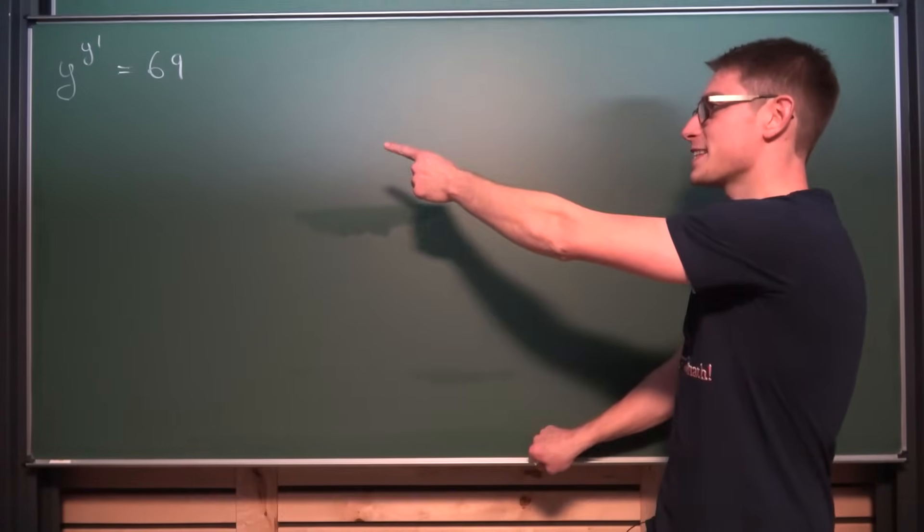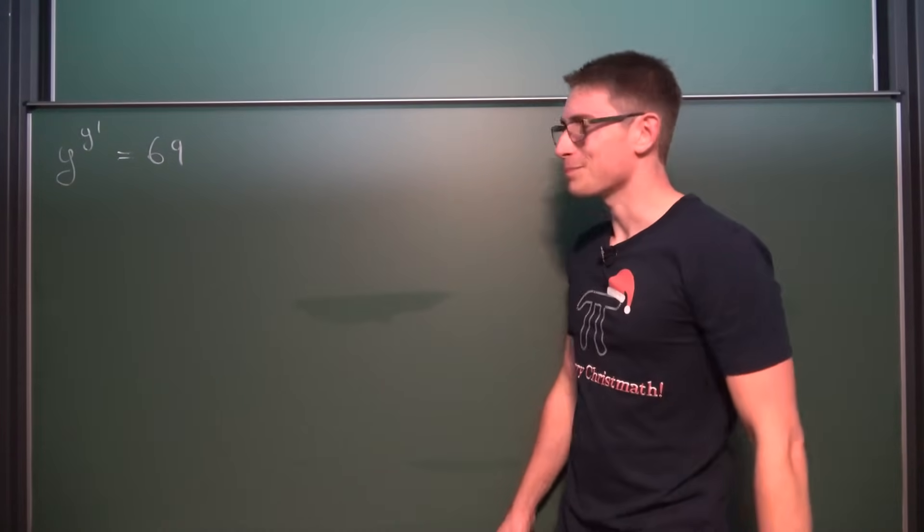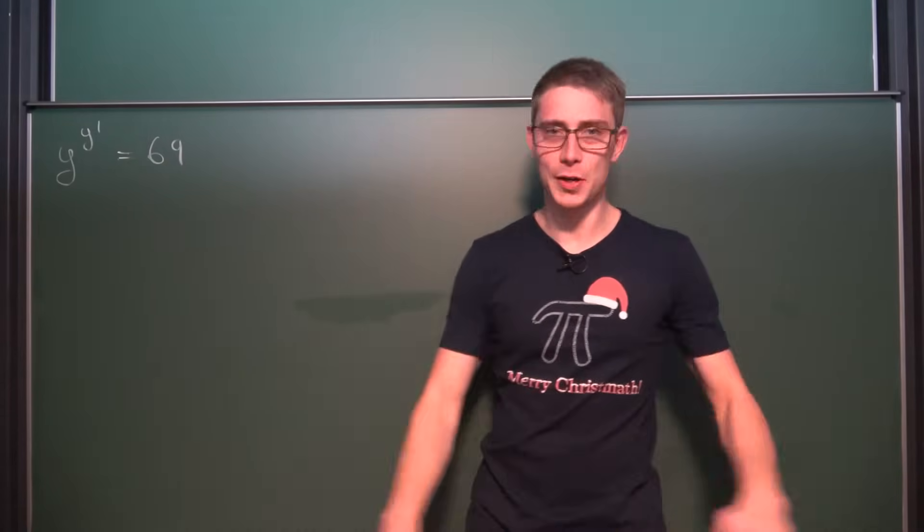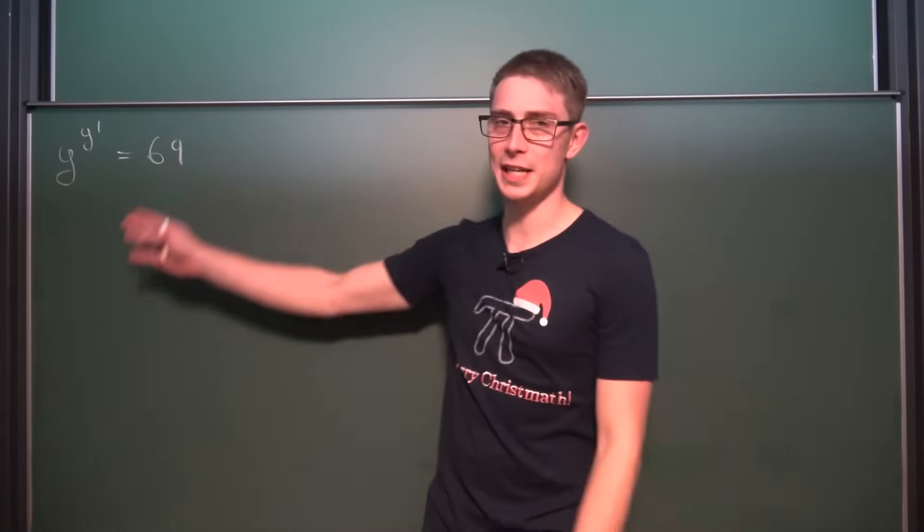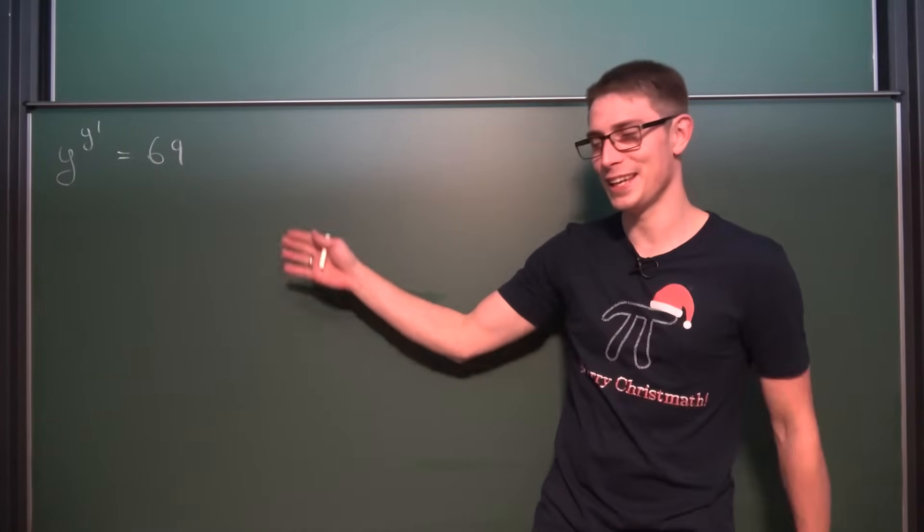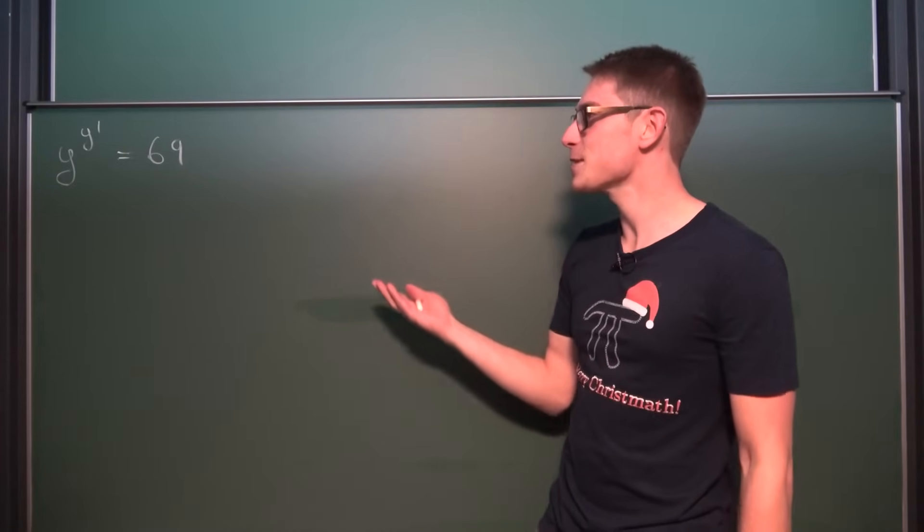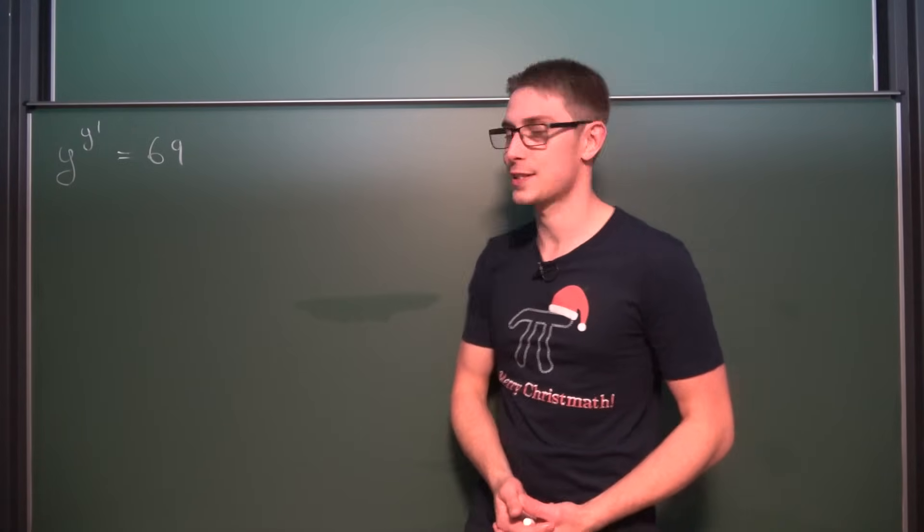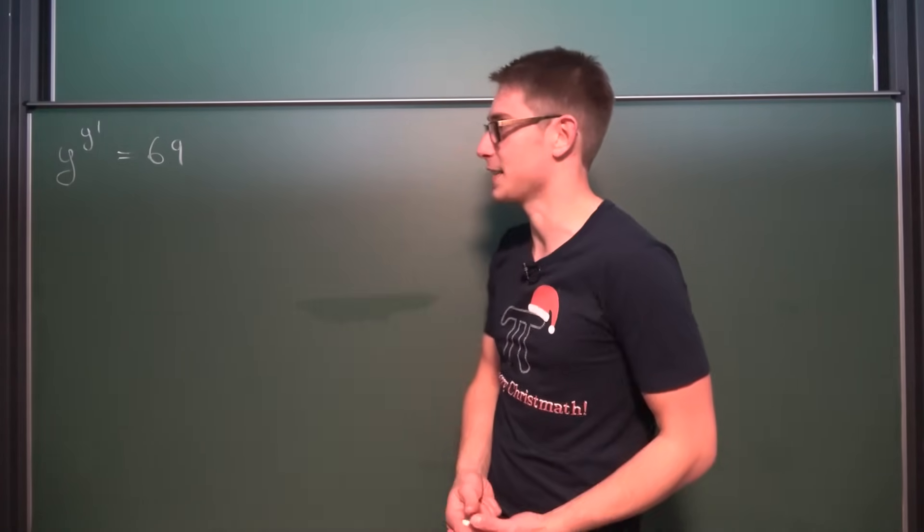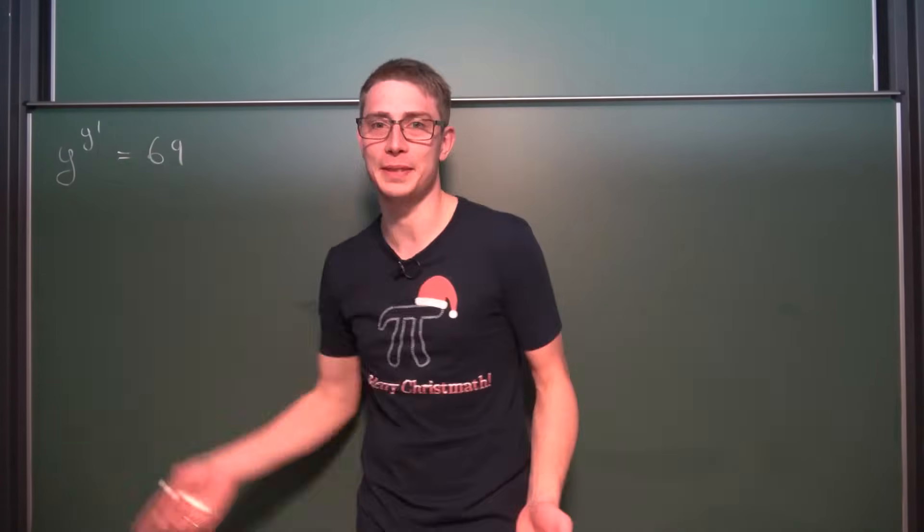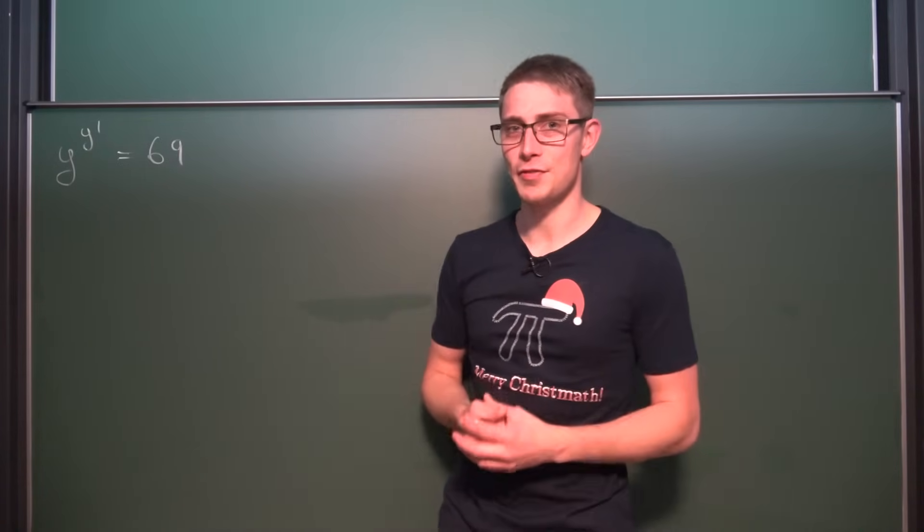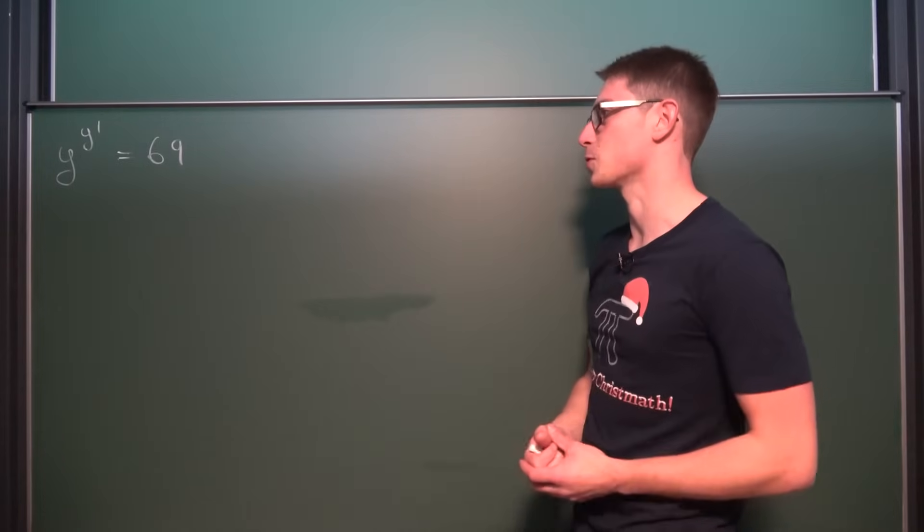And now this differential equation right here. y to the y prime is equal to some arbitrary constant. I just wrote any constant here. It really doesn't have any further meaning to it. That's the differential equation we are gonna take a look at today. And it's kind of funky I suppose. We got the derivative up there in the exponent. So give it a shot and see if you can figure it out for yourself. And now we are going to dive right in.